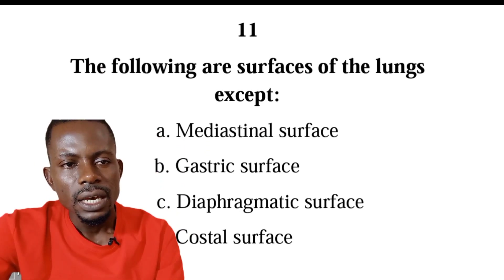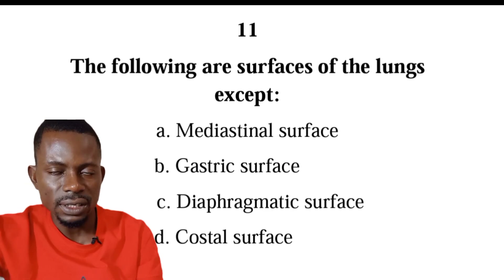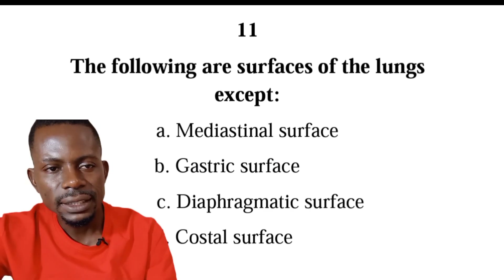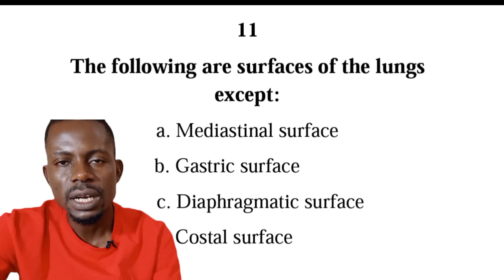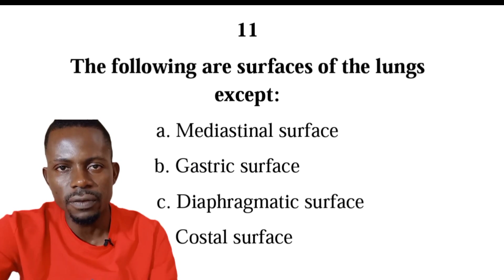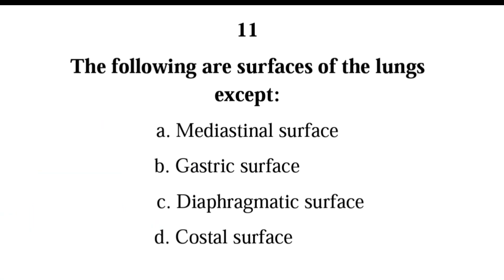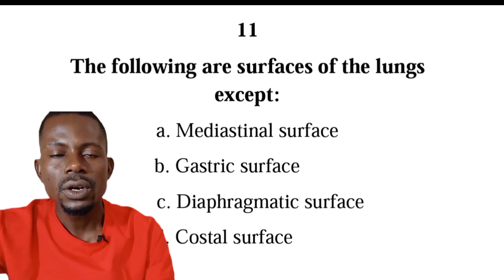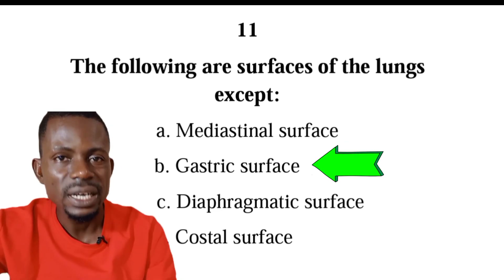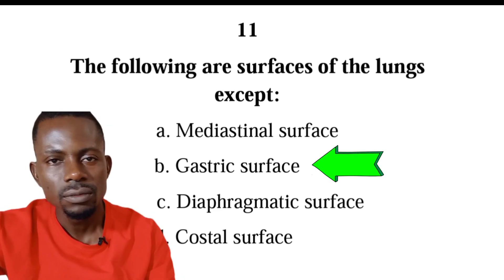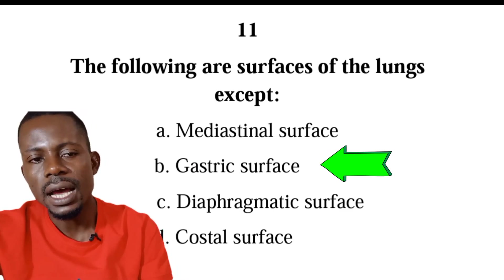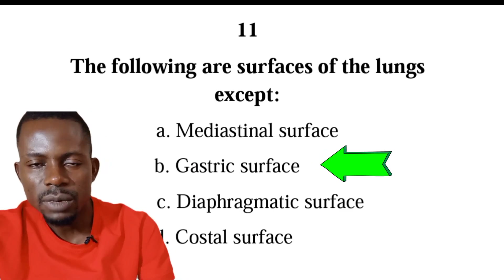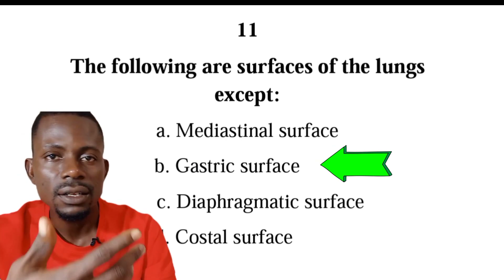Number eleven: the following are surfaces of the lungs except — we have mediastinal surface, gastric surface, diaphragmatic surface, and costal surface. The correct answer is B, gastric surface. There is no gastric surface in the lungs; gastric is more related to the stomach. Both lungs have mediastinal surface, diaphragmatic surface, and costal surface.